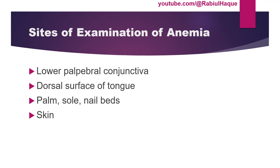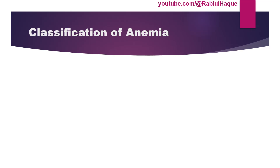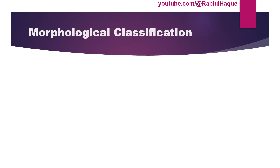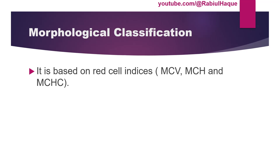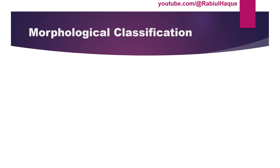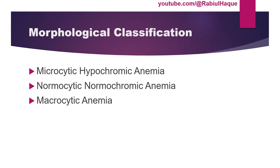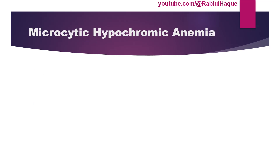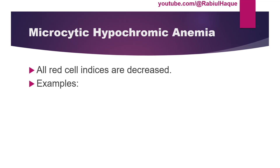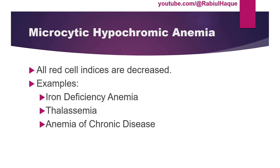Now let's talk about the classification of anemia. We can classify anemia in several ways. One way is morphological classification, which is based on red cell indices — mean corpuscular volume (MCV), mean corpuscular hemoglobin (MCH), and mean corpuscular hemoglobin concentration (MCHC). Anemia can be classified into three groups: microcytic hypochromic anemia, normocytic normochromic anemia, and macrocytic anemia. In microcytic hypochromic anemia, all red cell indices are decreased. Examples include iron deficiency anemia, thalassemia, anemia of chronic disease, and sideroblastic anemia.